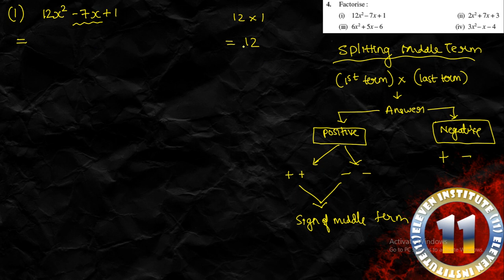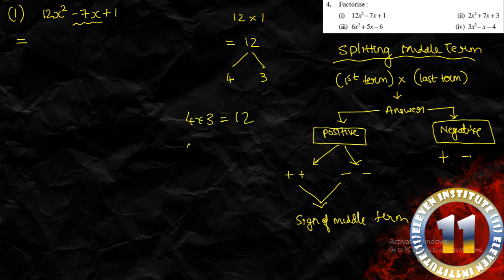Now let us apply this rule. The answer is positive and the sign of the middle term is negative, so both the factors will be negative. We need two numbers that are factors of 12 — on multiplying them we get 12, but on adding them we get 7. Clearly those are 4 and 3: 4 plus 3 is 7 and 4 multiplied by 3 is 12. Since both factors must be negative, minus 4 and minus 3 give us minus 7 when added and plus 12 when multiplied.